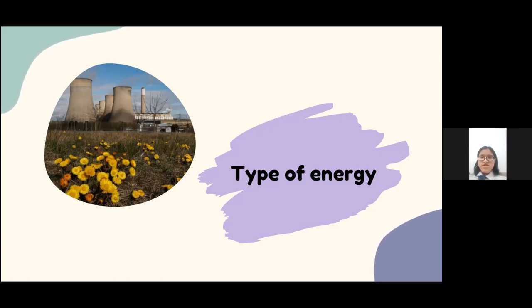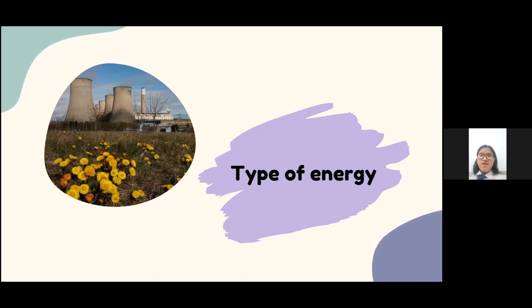Four: electrical energy — the movement of electrons, the tiny particles that make up an atom along with protons and neutrons. Five: radiant energy, also known as light energy — a type of kinetic energy that travels in waves; examples include the sun and x-rays. Six: light energy — a form of electromagnetic radiation; light consists of photons produced when an object is heated up, and it travels in waves as the only form of energy visible to the human eye.